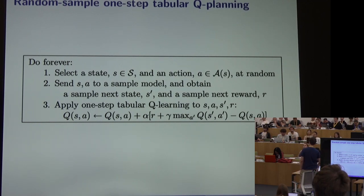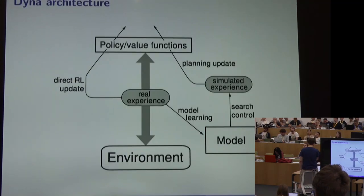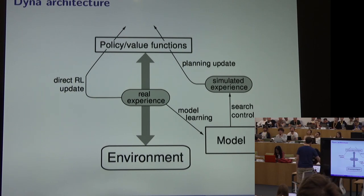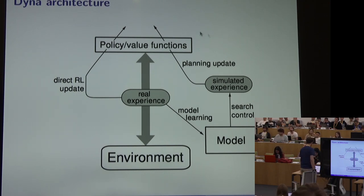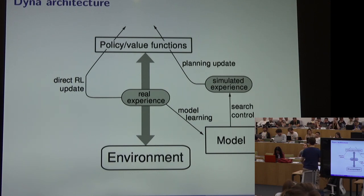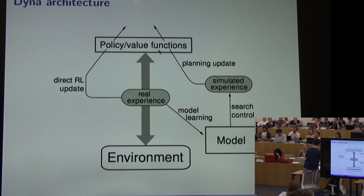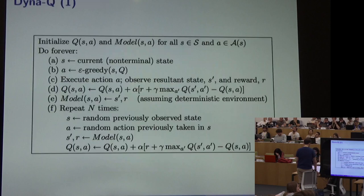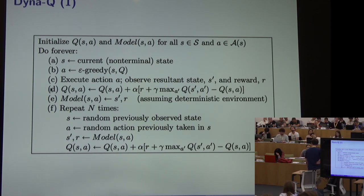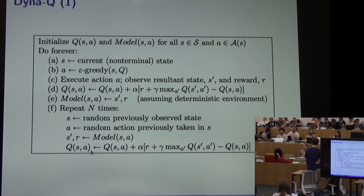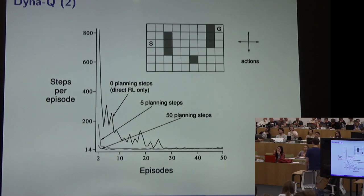Sutton's favorite form of model-based RL is an architecture called Dyna. The Dyna architecture mixes model-free and model-based learning: we interact with the environment, generate real data, and use it for a direct Q-learning or SARSA update. We also feed that data to a model learner, then use the model to generate simulated experience, which we also use to update our policy and value function — doing both real and simulated updates together. We can generate n pieces of simulated data per real step to perform additional updates.